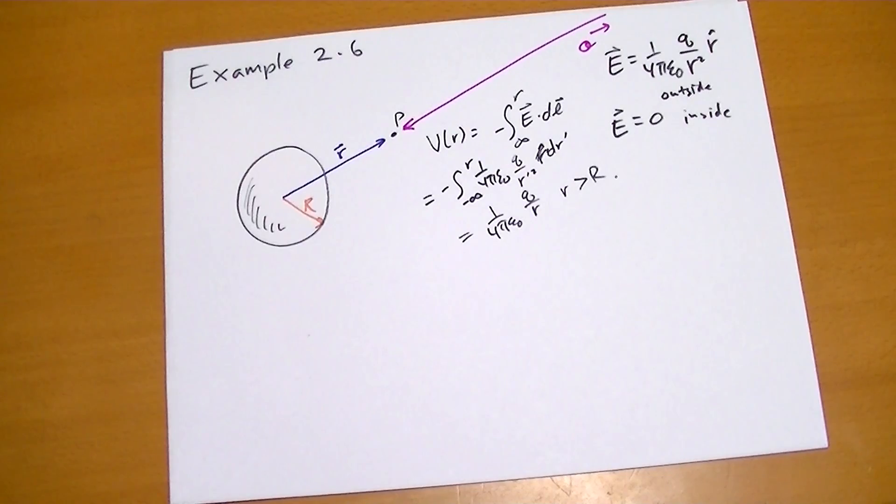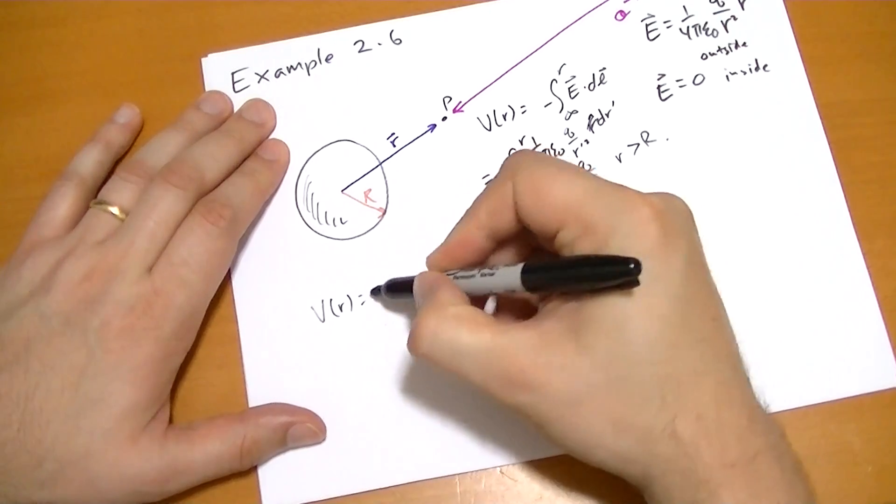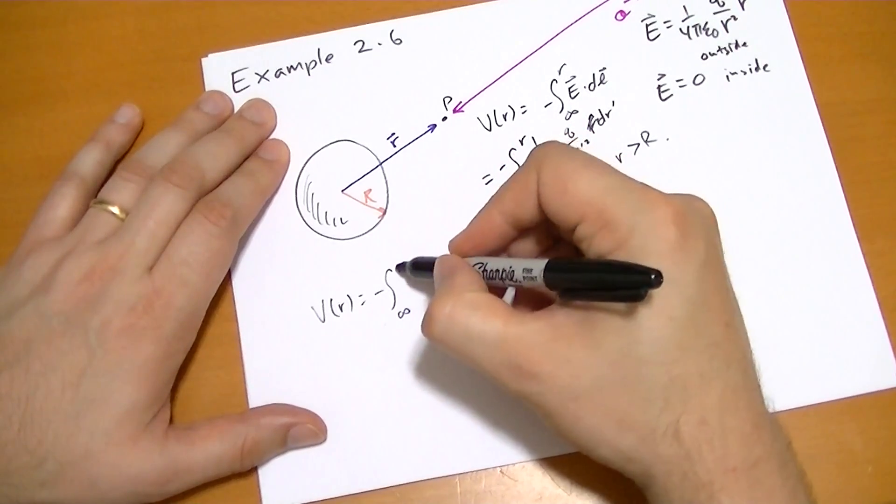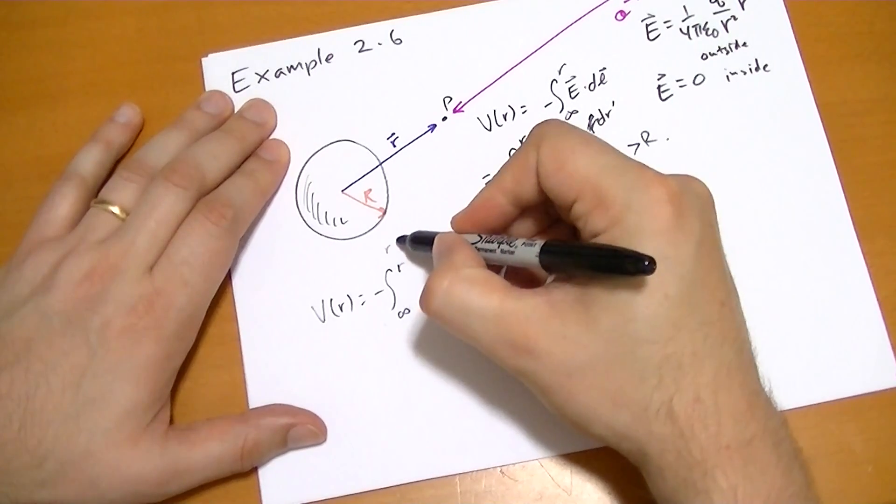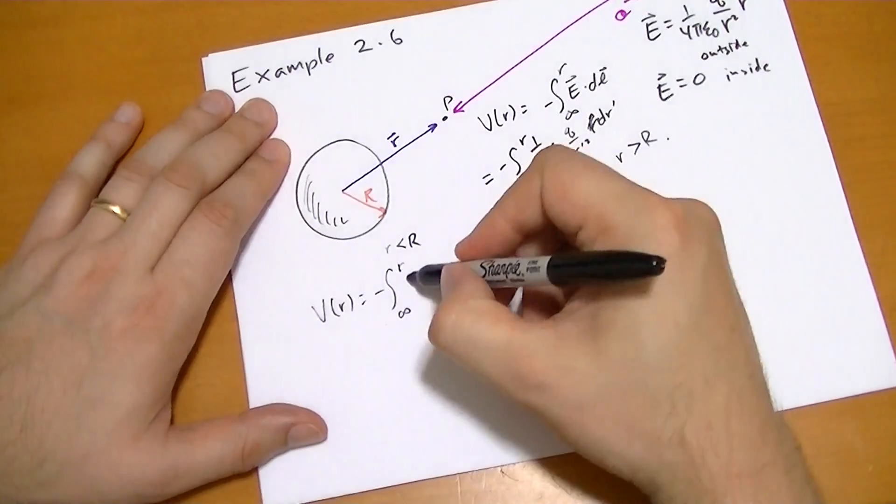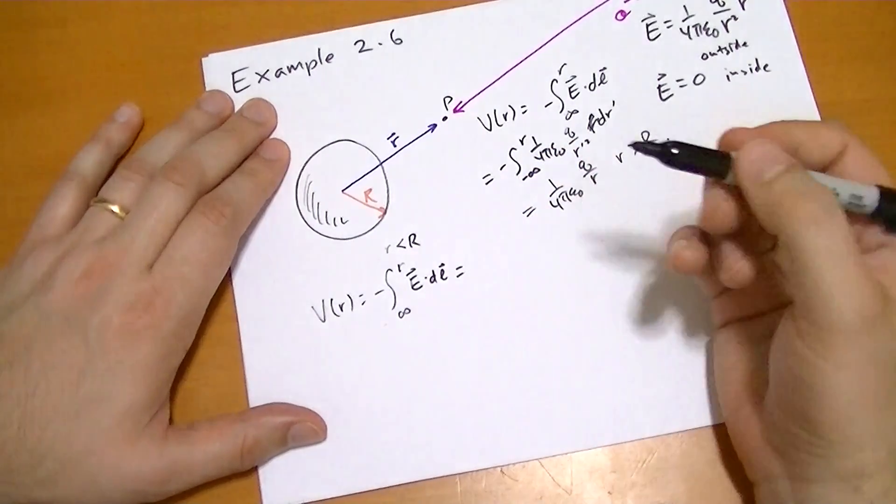To find the electric potential inside the sphere, we just go like this, minus the integral from infinity to some point r inside the sphere, where r is less than R. And that's e vector dot dl vector. And we have to break this up into two different integrals.